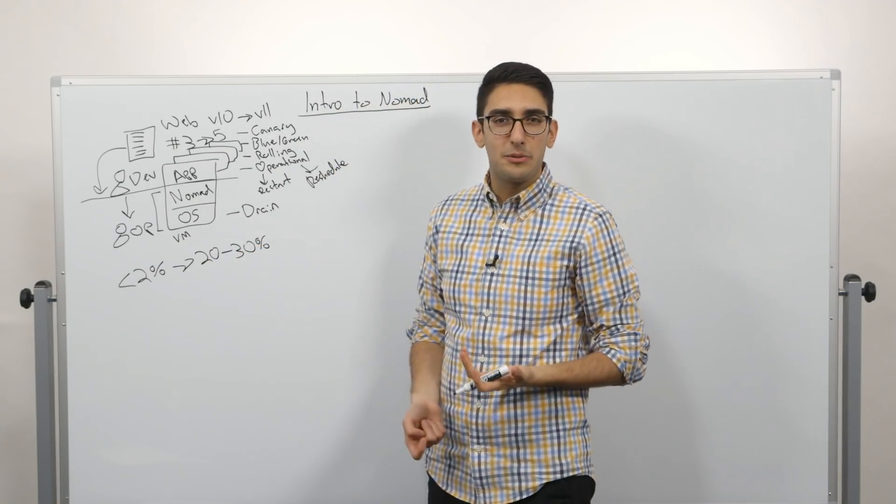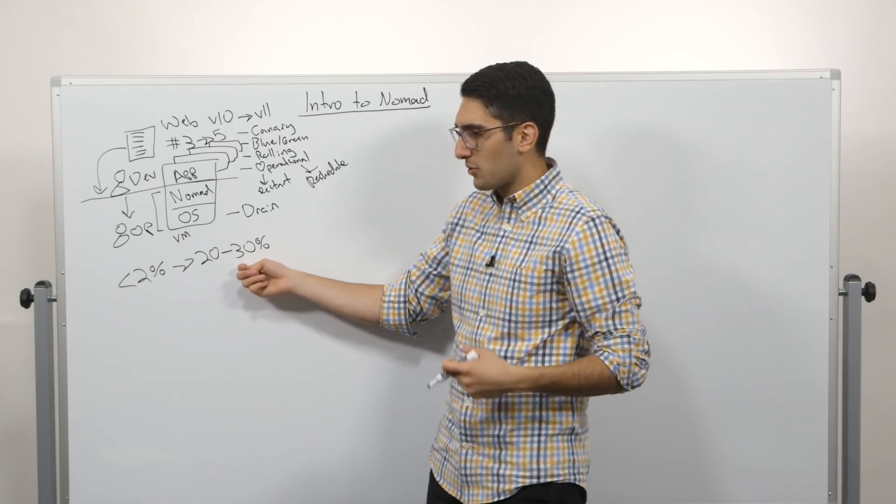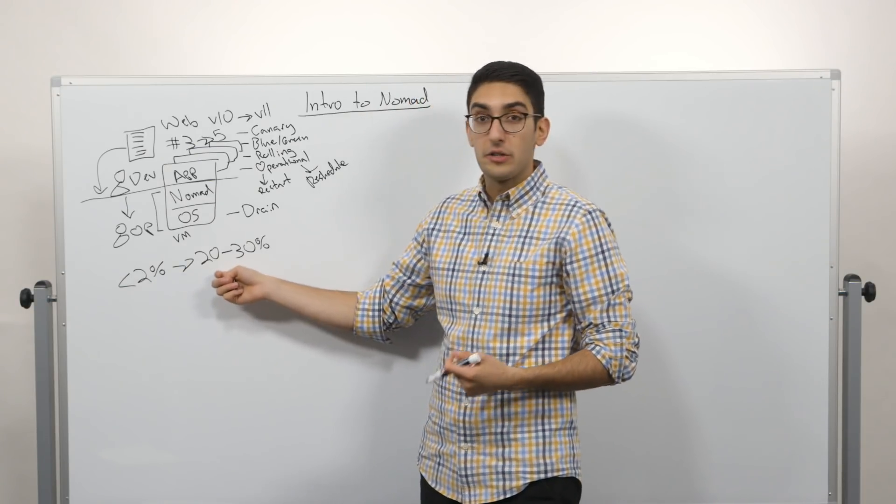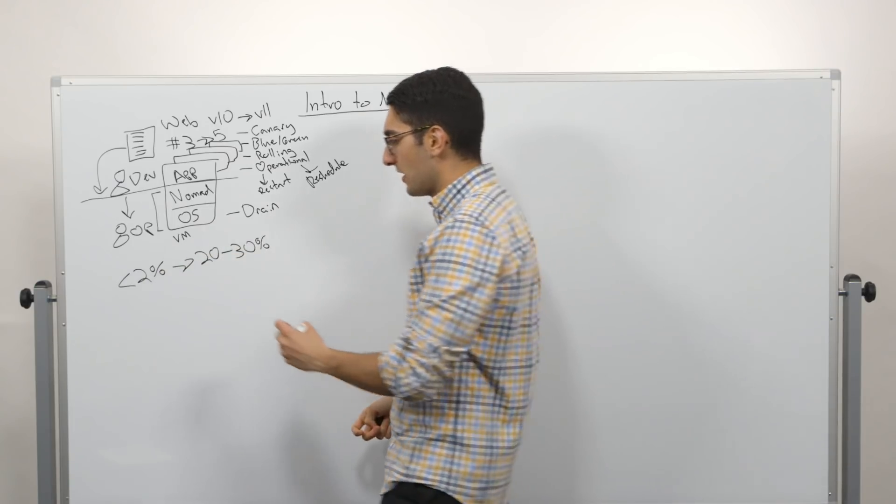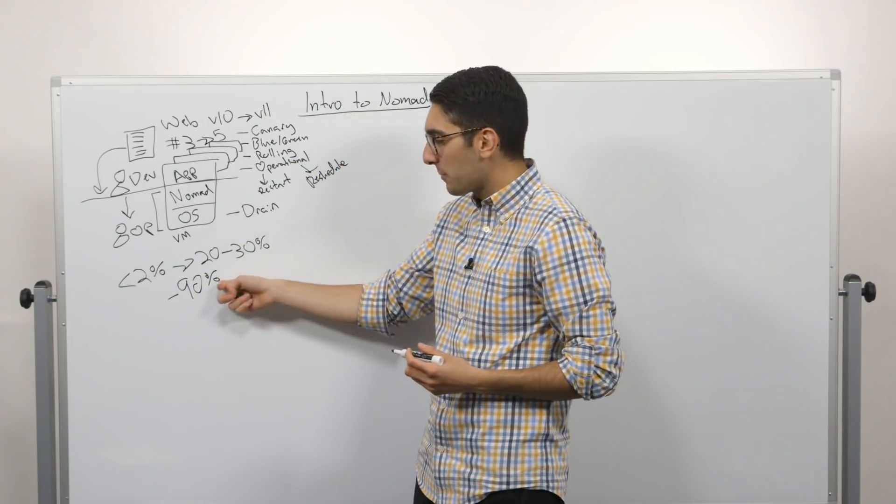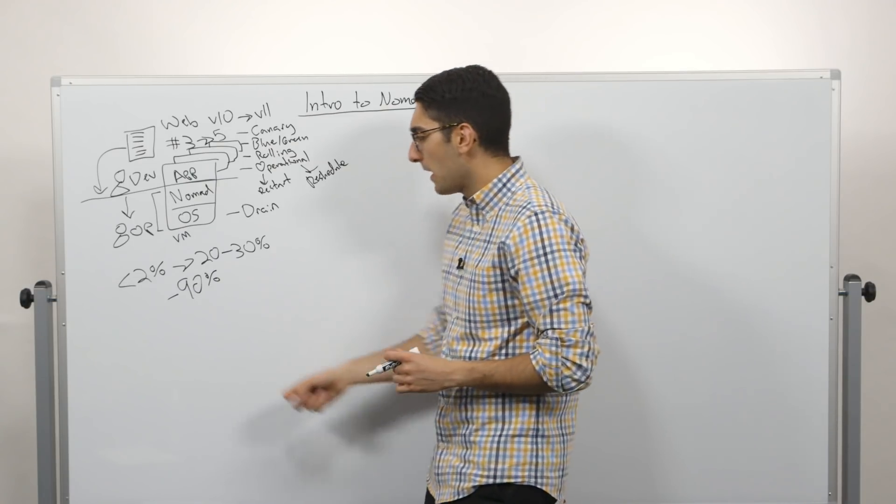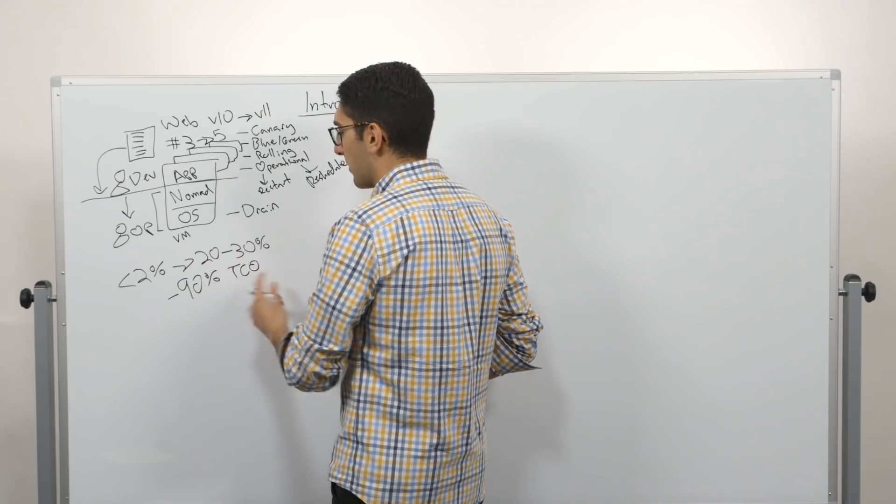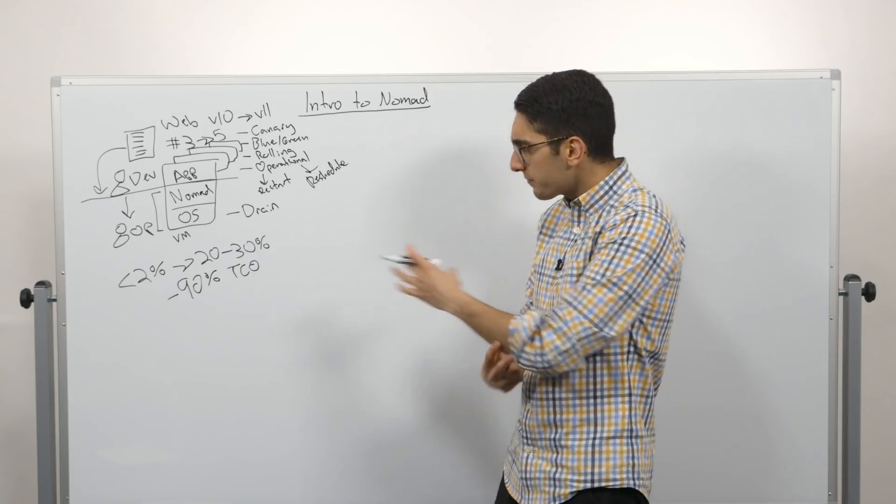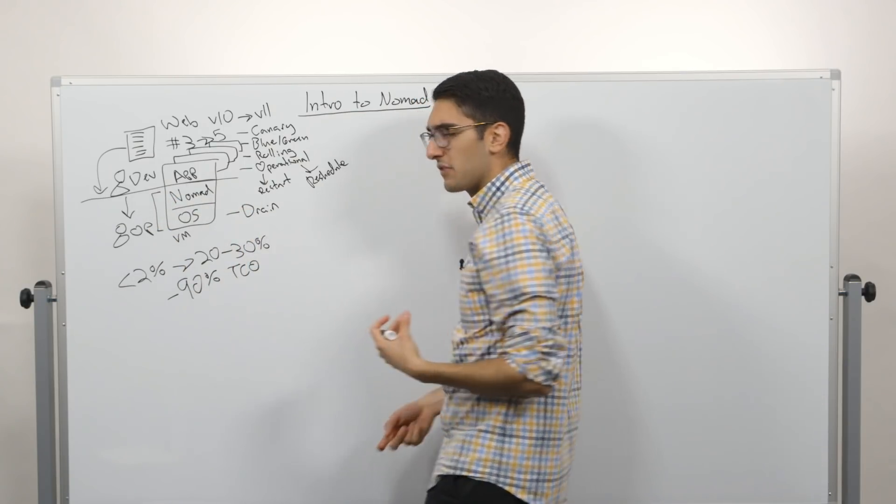Now you might look at this and say 20 to 30% utilization doesn't sound that good. Why don't we shoot even higher than that? But what we have to realize is the sort of law of small numbers. Because we're starting at sort of such a bad place going from 2% to call it 20%, what you still get out of this transition is an incredible reduction in your fleet size. So as we go from 2% to 20%, it's actually a 90% reduction in the amount of overall hardware we need. We can replace every 10 machines with one basically. So there's this great sort of total cost of ownership optimization that comes from running multiple applications and making better use of our resources. So this is the kind of primary focus.